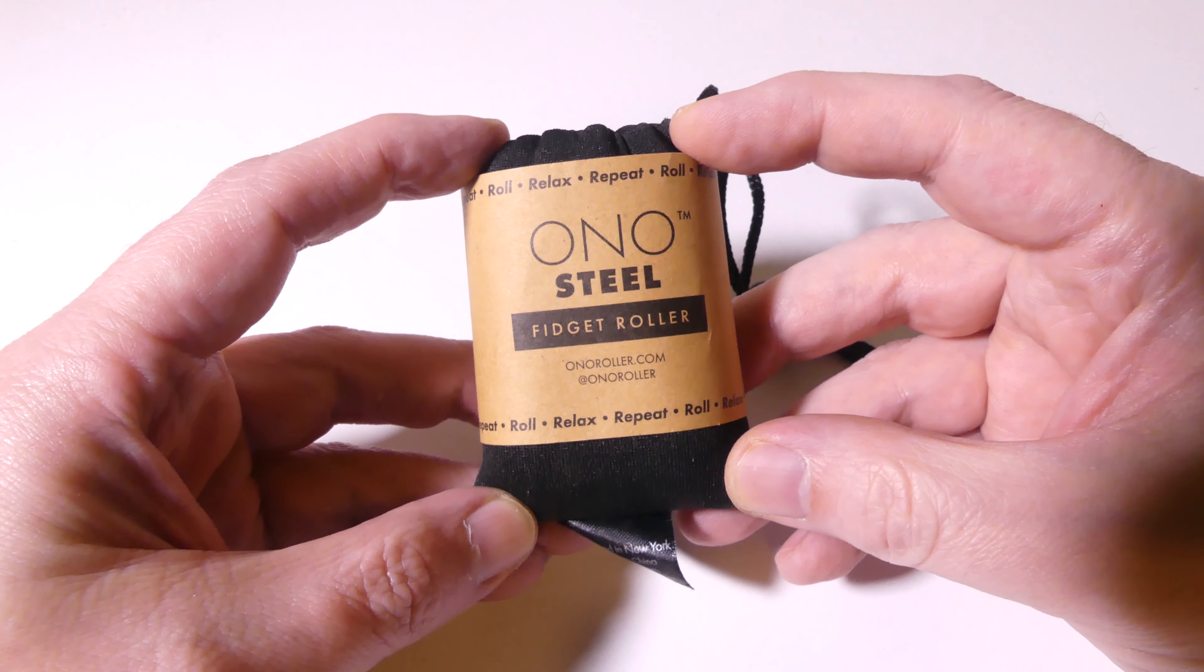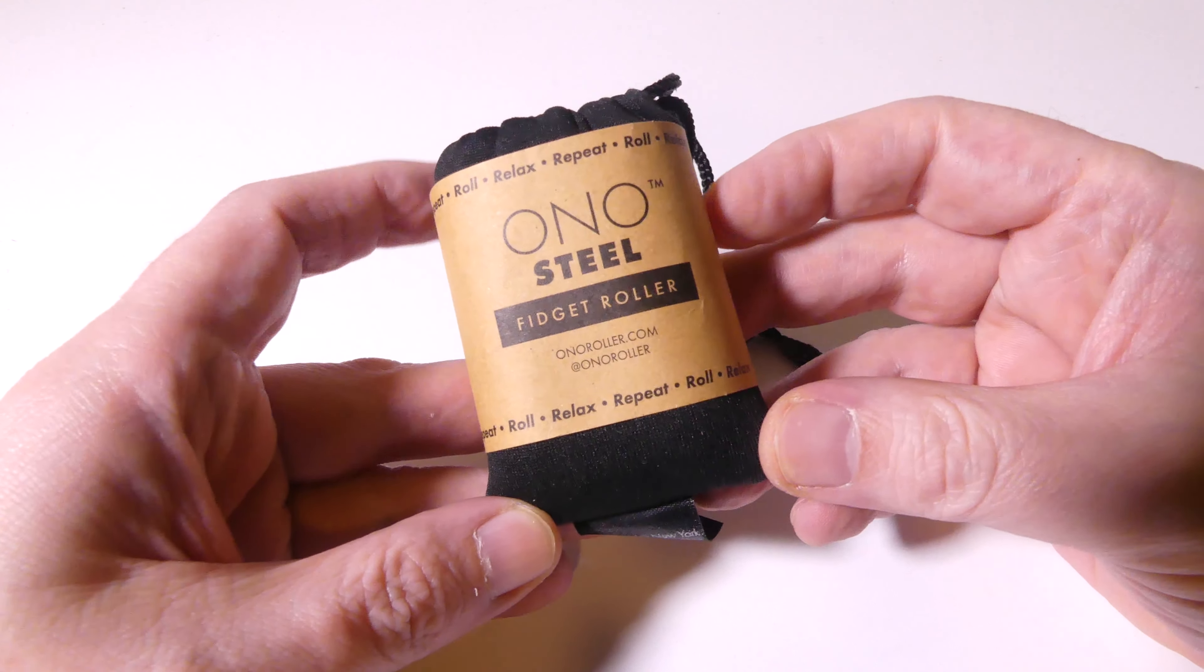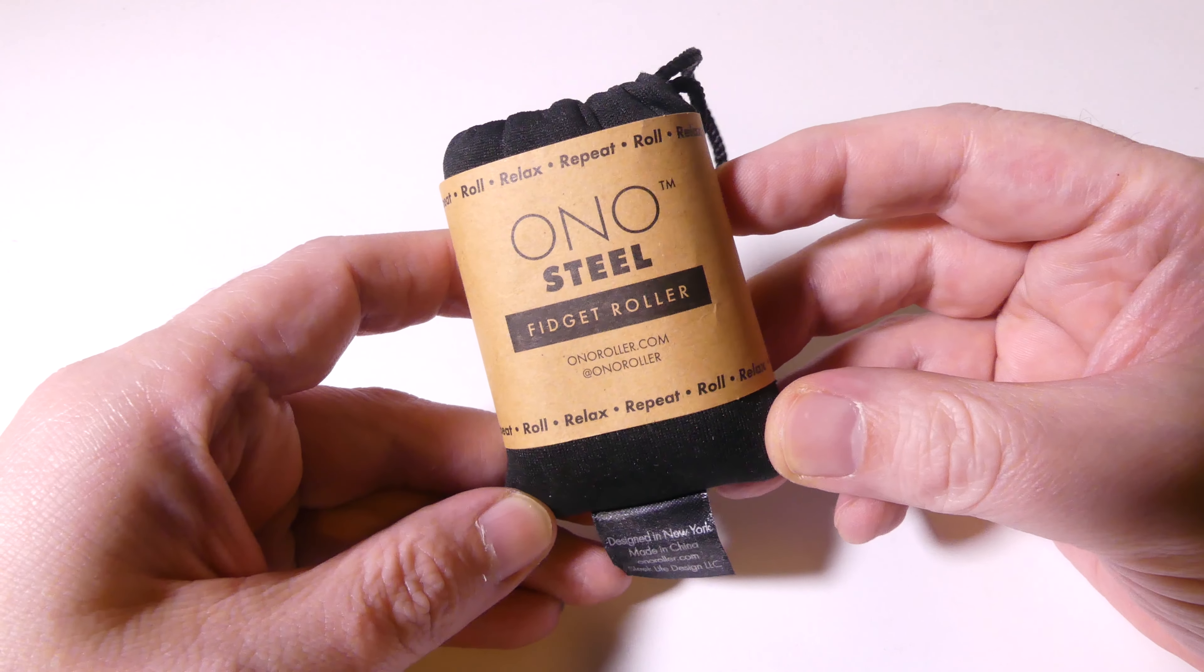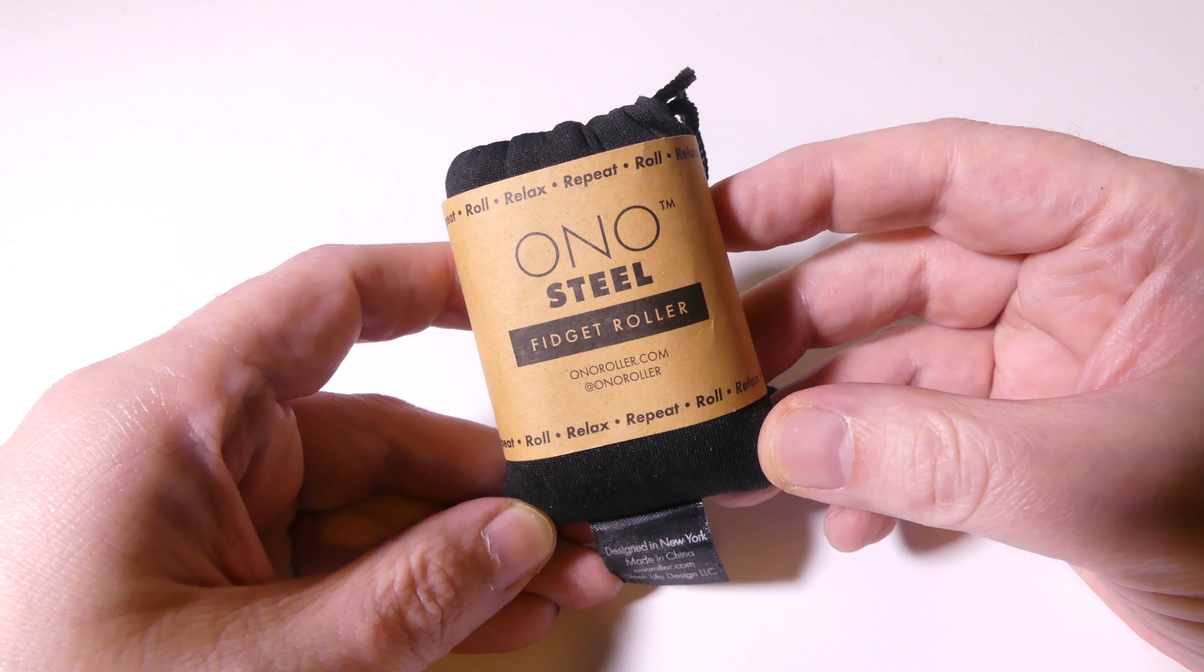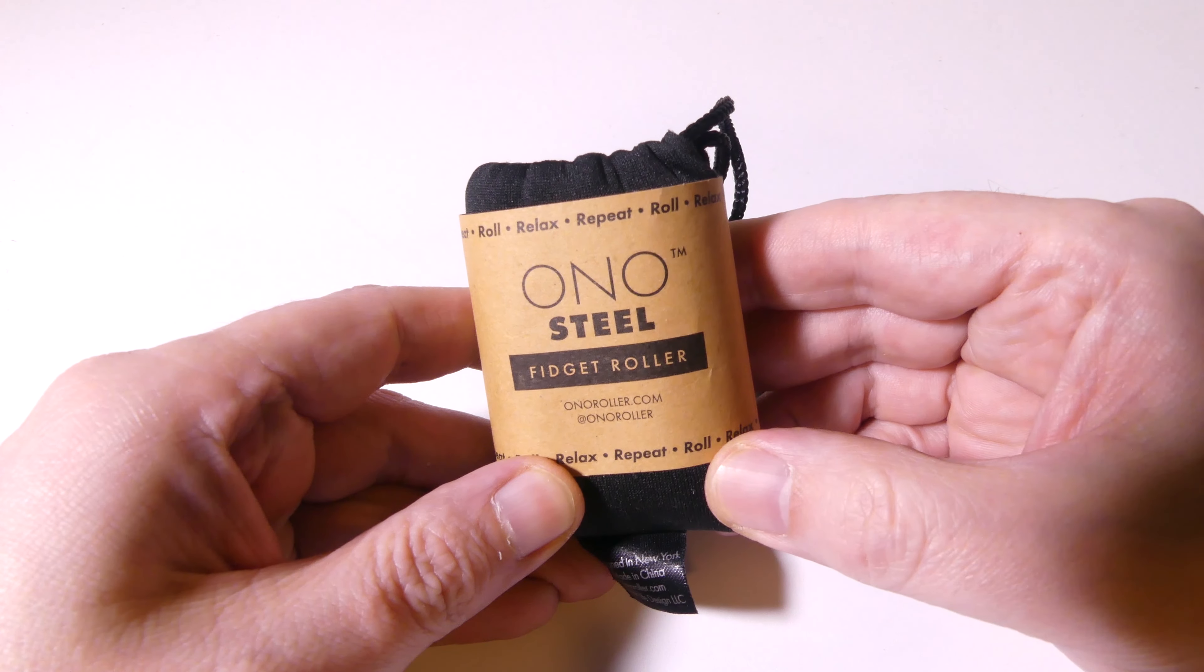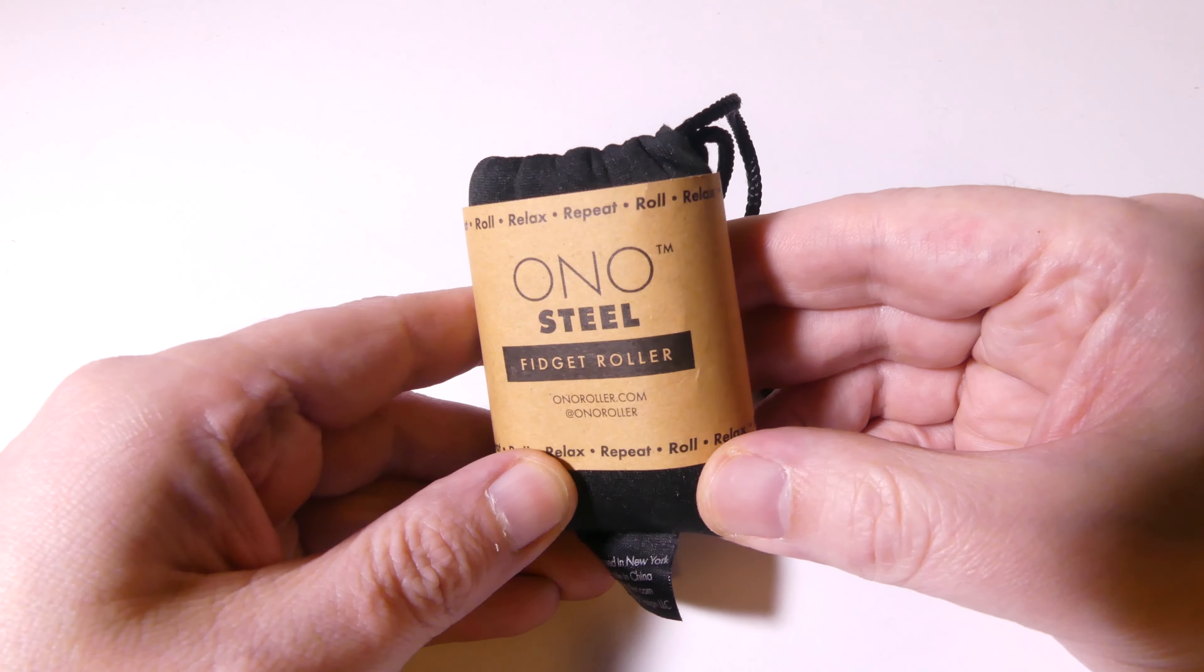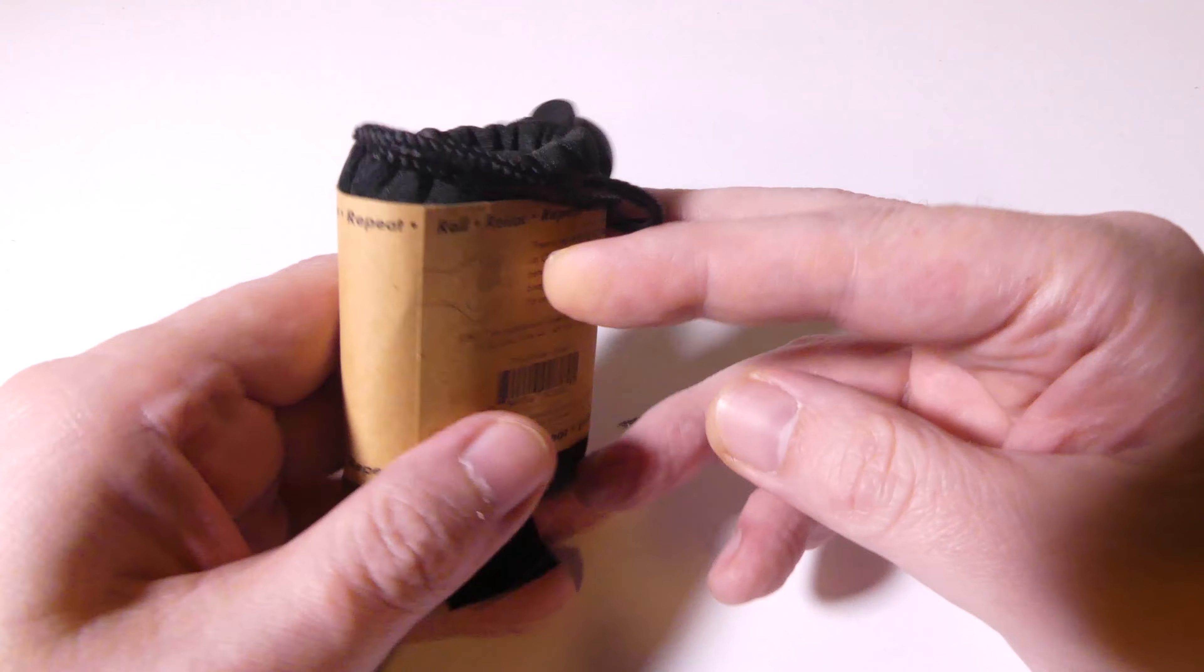Okay, so this is the Ono steel, and it is made out of stainless steel instead of aluminum like the regular one was. And they also have an Ono Junior as well, which is made out of ABS plastic, so it really just depends on the texture and feel of the Ono, which one is really going to resonate with you.